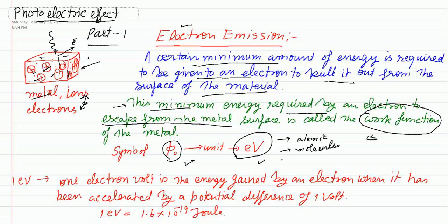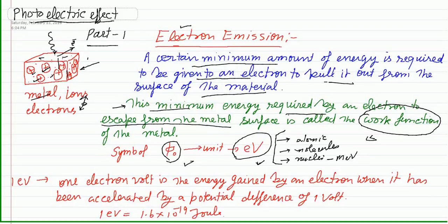For nuclei, we use mega electron volt (MeV). So these units are used especially for microscopic systems in terms of energy. Now, if we have to define one electron volt: